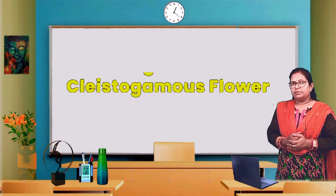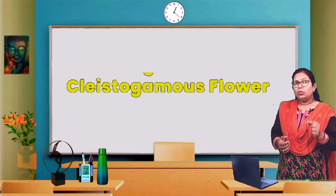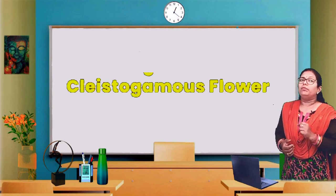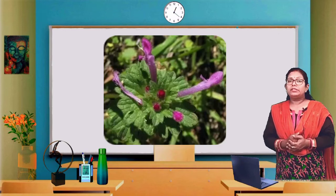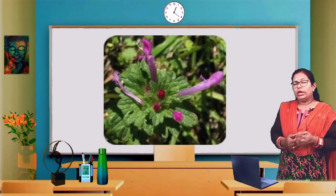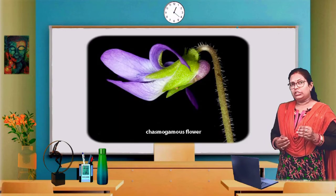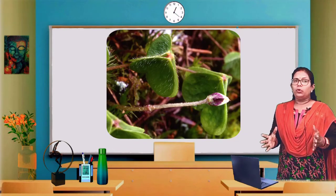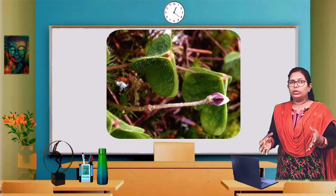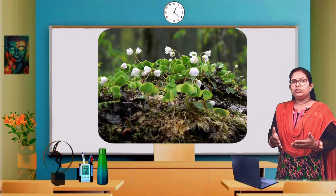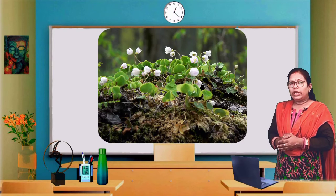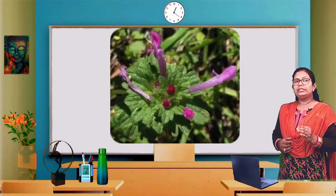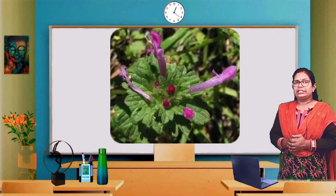Self-pollination is the only means of pollination in cleistogamous flowers. Cleistogamous flowers are flowers that do not open. Since they remain closed, pollinating agents cannot access them, so self-pollination is the only means of pollination in this type of flower.